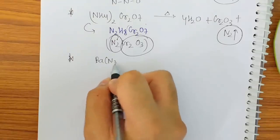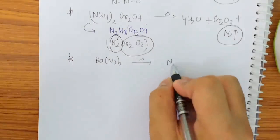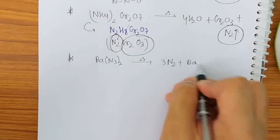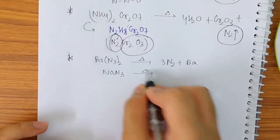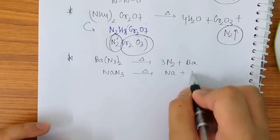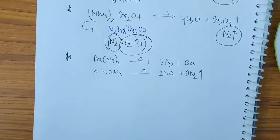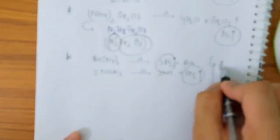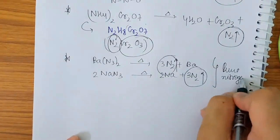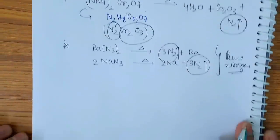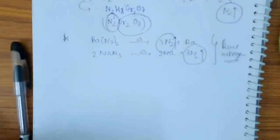It is given that Ba(N3)2 on heating gives 3N2 plus barium. NaN3 on heating is Na, actually 2 moles, so 2Na plus 3N2. So why this reaction is important? Because I am getting pure nitrogen here. This is pure. So pure nitrogen. This thing must be remembered, that these two are used for the generation of pure nitrogen.